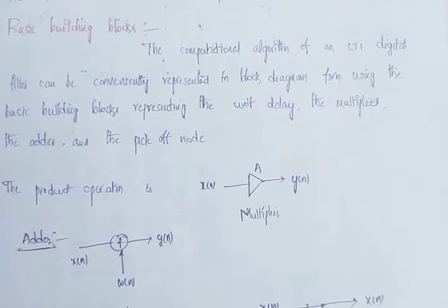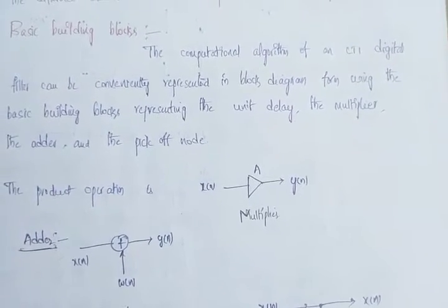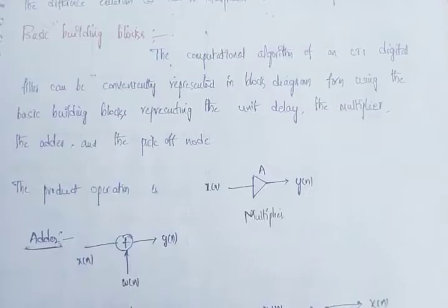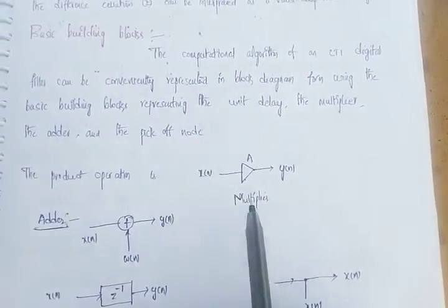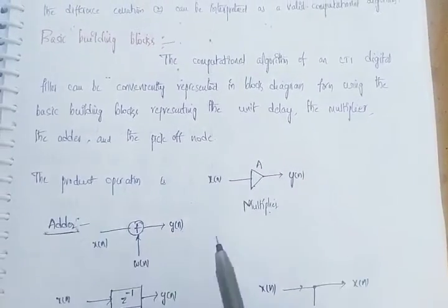The product operation can be performed - these symbols are originally called multipliers. This is the adder, generally we call it as an adder.